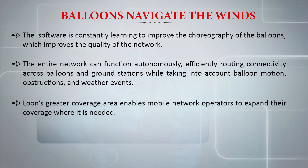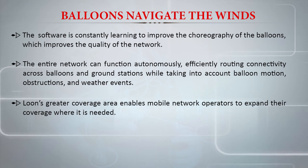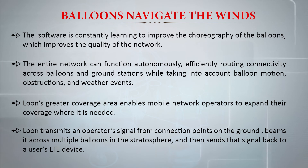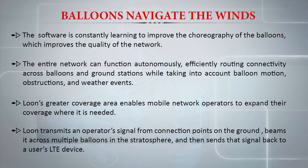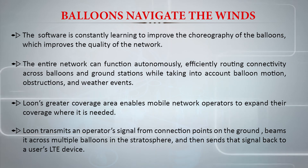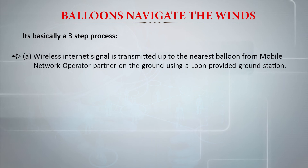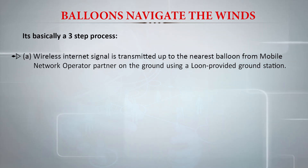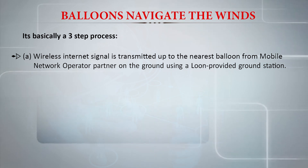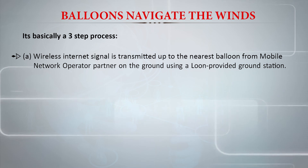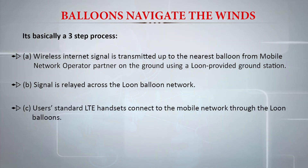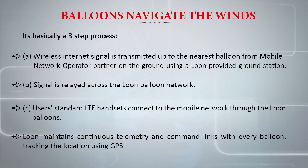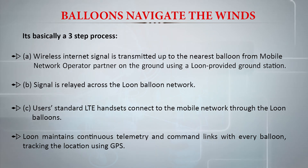Loon's greater coverage area enables mobile network operators to expand their coverage where it is needed. Loon transmits an operator signal from connection points on the ground, beams it across multiple balloons in the stratosphere, and then sends that signal back to a user's LTE device. It's a three-step process: first, wireless internet signal is transmitted up to the nearest balloon from a mobile network operator partner on the ground using a Loon-provided ground station; second, the signal is relayed across the Loon balloon network; third, the user's standard LTE handset connects to the mobile network through the Loon balloons. Loon maintains continuous telemetry and command links with every balloon, tracking location using GPS.